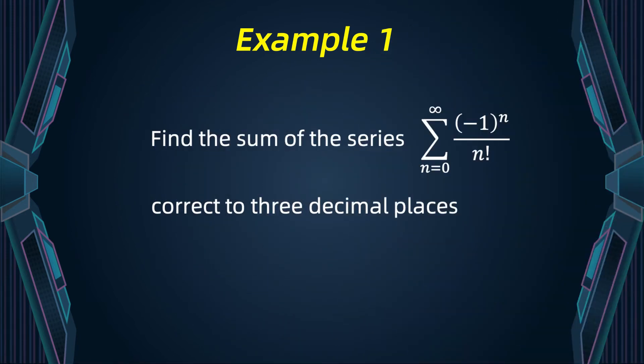Here we have our first example. We must find the sum of the series from zero to infinity of minus one to the n divided by n factorial, correct to three decimal places.